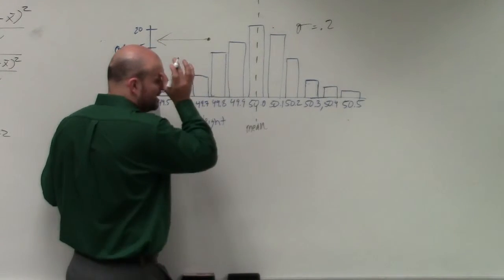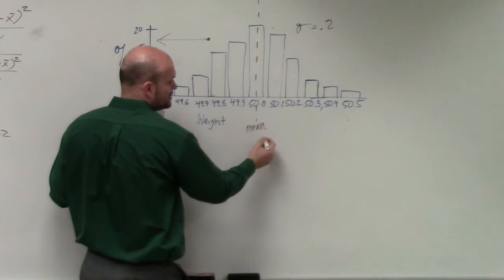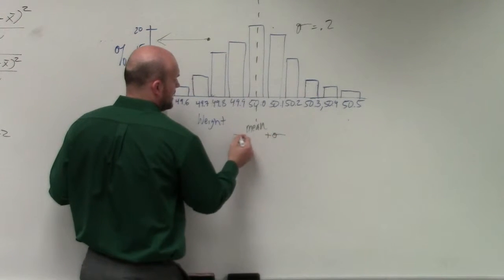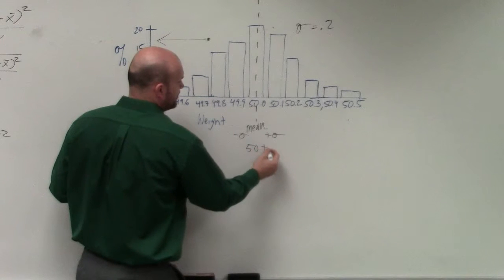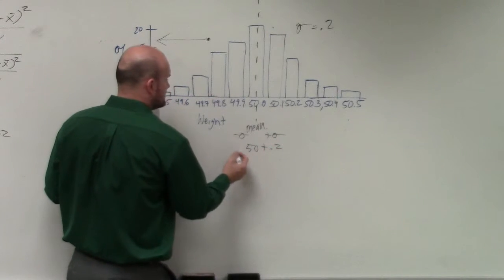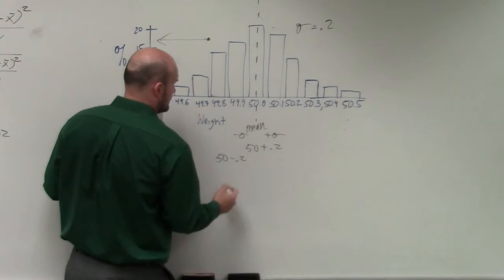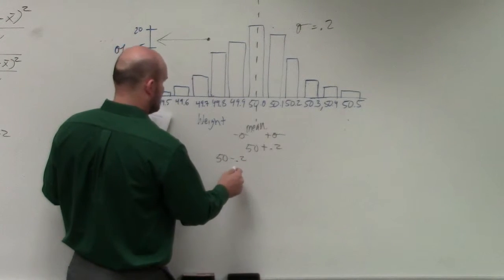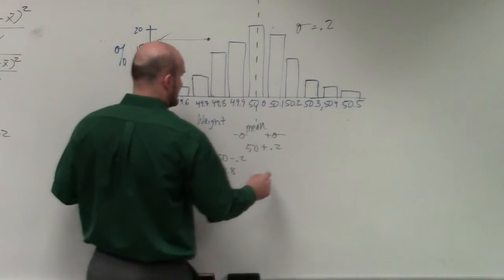So what we talked about last class period is finding one standard deviation. To do that, we take the standard deviation, and we add it to the mean, and we subtract it to the mean. So I basically have 50 plus 0.2, and 50 minus 0.2. So I get 49.8, and I get 50.2.